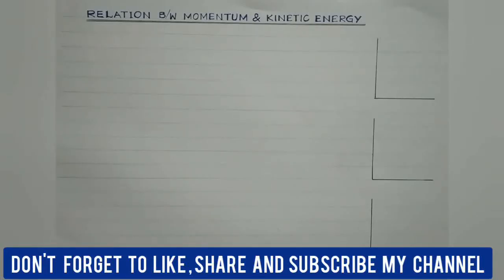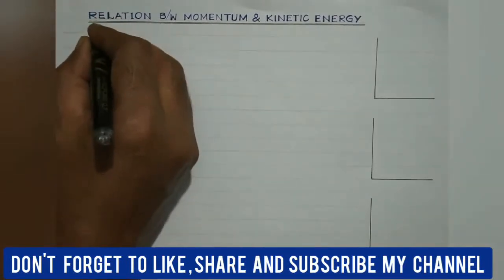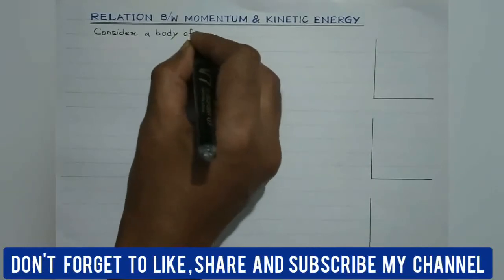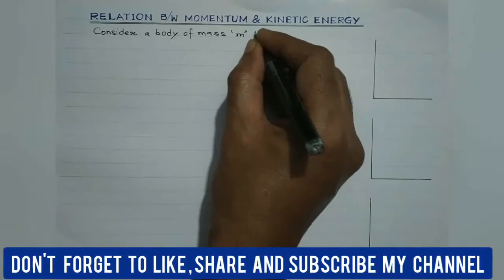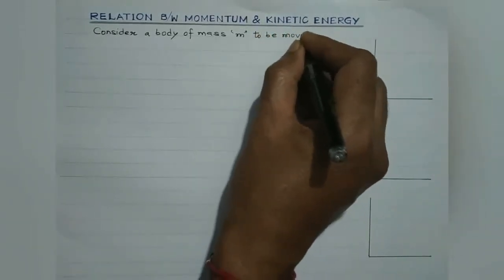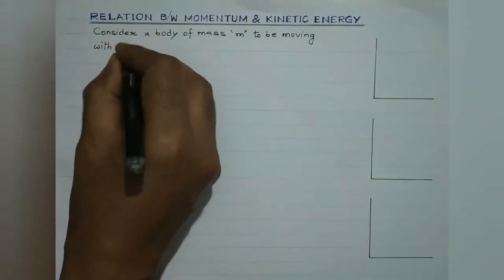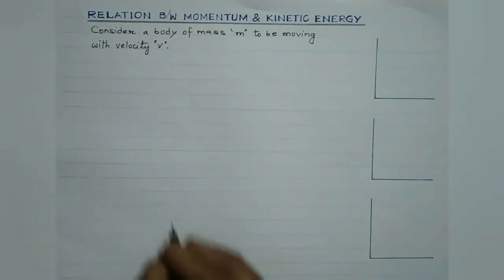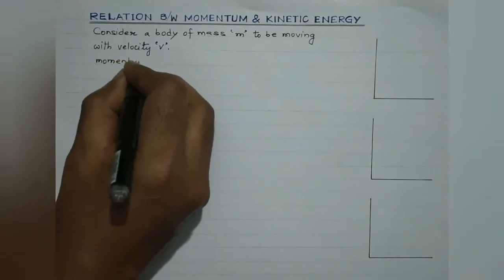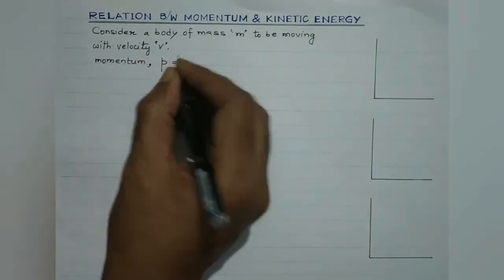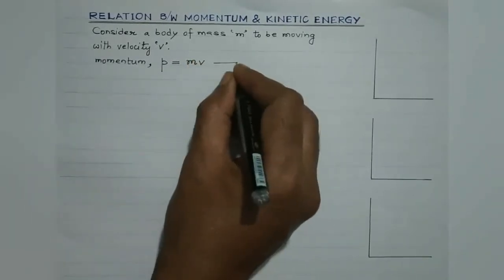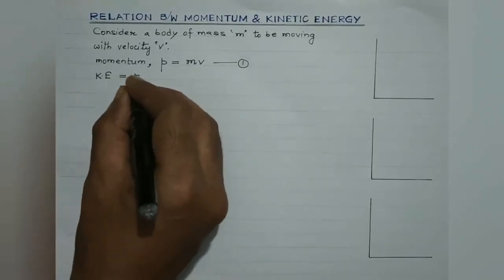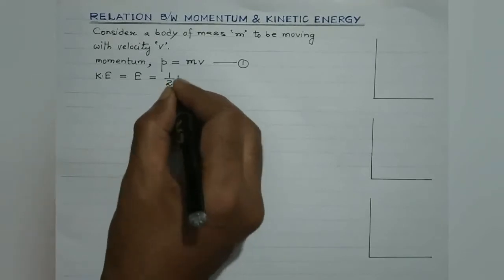Now let us discuss the relationship between momentum and kinetic energy. Consider a body of mass m moving with velocity v. We are aware momentum of a body is defined as the net amount of motion contained in a body. The linear momentum of the body, represented by p, is given by the product of mass and velocity. The kinetic energy, which is the energy possessed by the body by virtue of its motion, is given by E equal to half mv square.